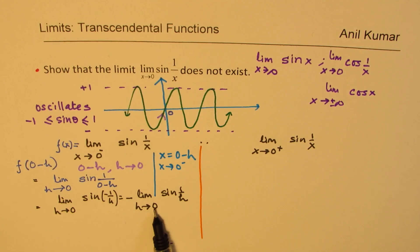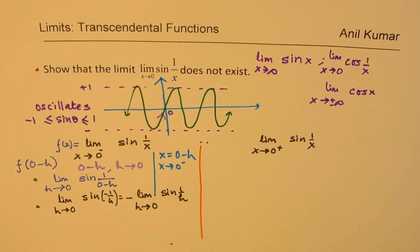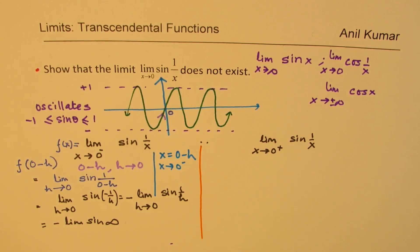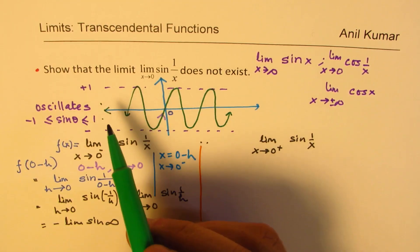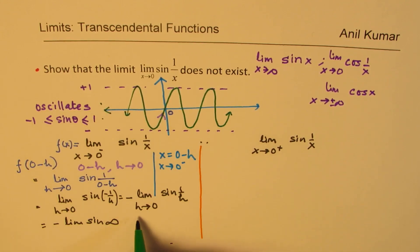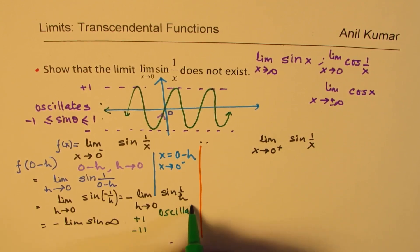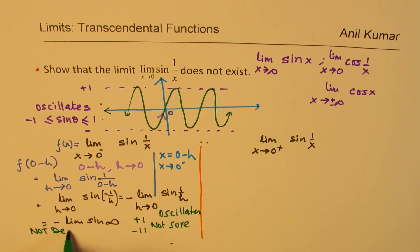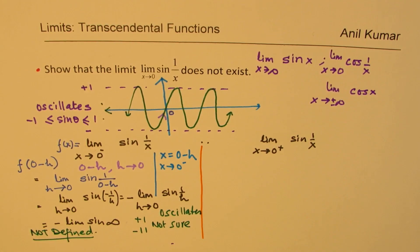Now when h is 0, then 1 over h is infinitely large. So what are we trying to say here? We are trying to say: minus limit sine of some value which is infinitely large, because 1 over h is an infinitely large value. So we are trying to approach a point which is a very, very large value. What we notice here is that that point could be anywhere between plus 1 and minus 1. So it oscillates. That means we are not sure, so we say it is not defined. So when you are approaching from the left side, it is not defined.